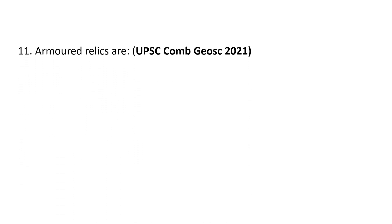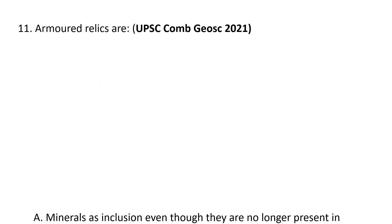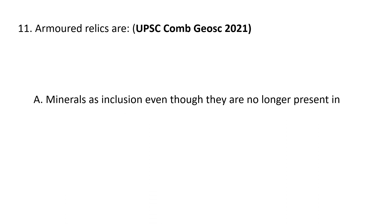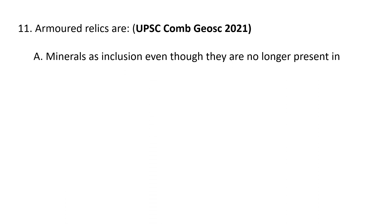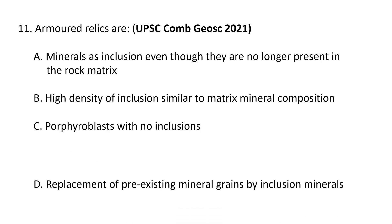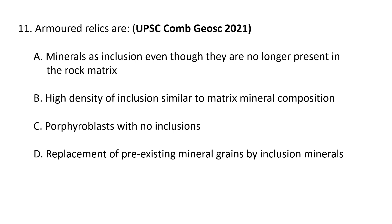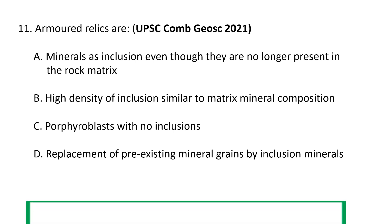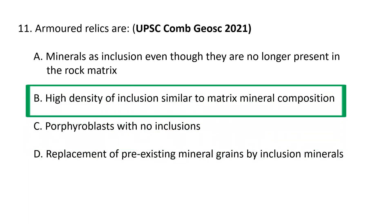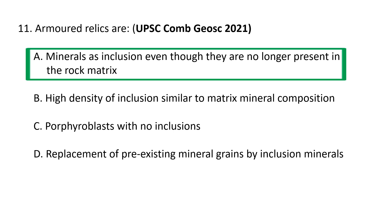Question 11: Armored relics are — choices: (a) minerals as inclusions even though they are no longer present in the rock matrix, (b) high density of inclusions similar to the matrix mineral composition, (c) porphyroblasts with no inclusions, or (d) replacement of pre-existing mineral grains by inclusion minerals. The correct option is A — armored relics are minerals as inclusions even though they are no longer present in the rock matrix.